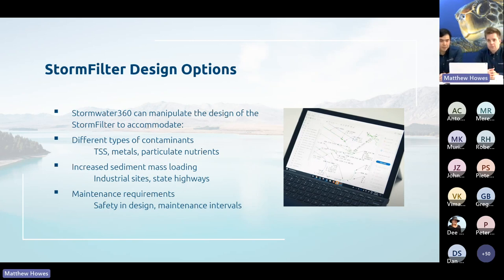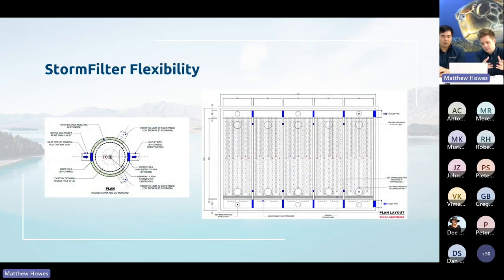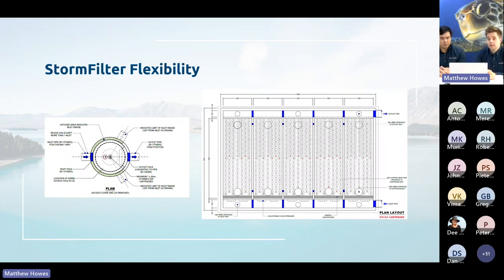Because we know the head losses intimately, we can manipulate the design depending on the contaminants present, whether there are increased sediment loads from industrial sites or state highways, and any safety, design, or maintenance interval requirements. The result is a very flexible product — ranging from our smallest device, a single cartridge in a 1050 manhole, up to a system with approximately 570 cartridges, with a small orange circle on the drawing showing the scale of a person relative to the large vault.